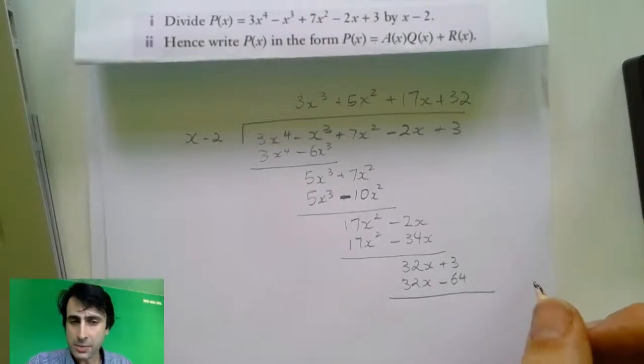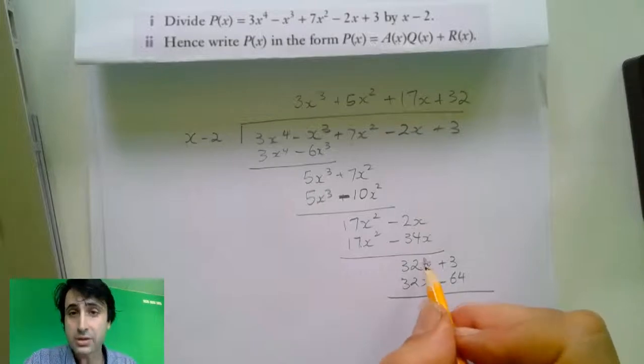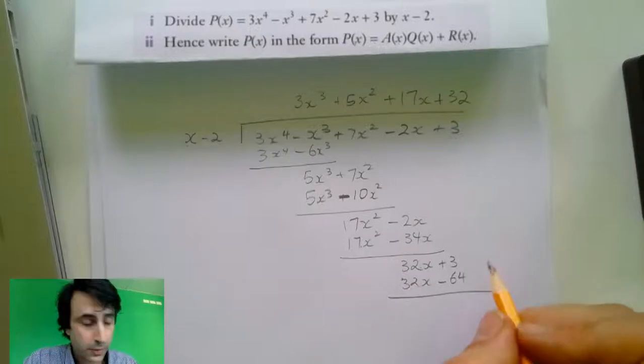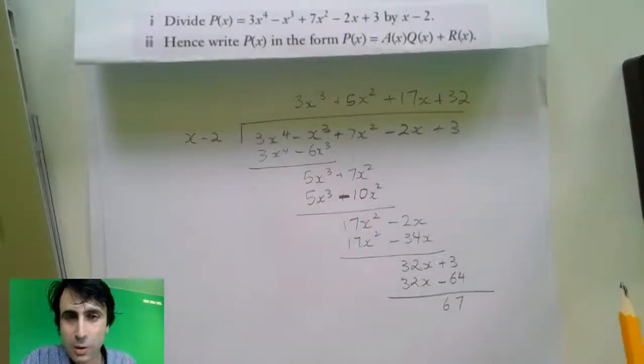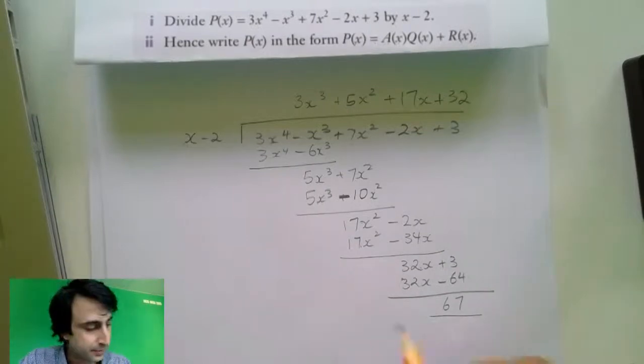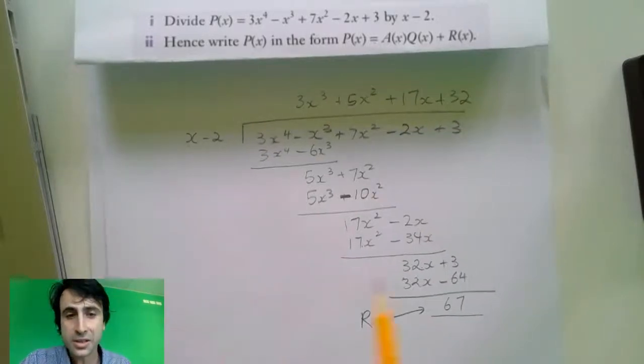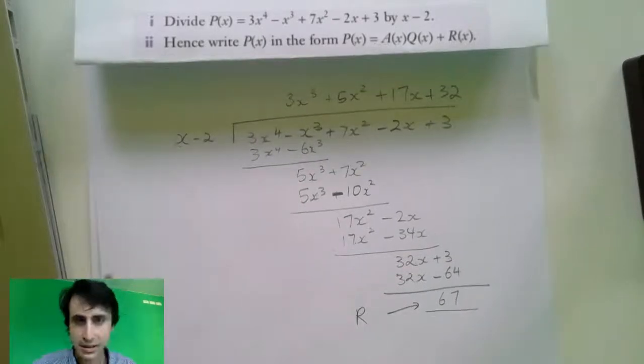Now, a strange thing is going to happen here because 32x minus 32x equals 0. Positive 3 minus negative 64 equals positive 67. Now, how many times does x go into that? It doesn't work. And so, what we see here is that there's actually a remainder of 67. And this can happen often with polynomials. When you divide one into the other, there can sometimes be a remainder. And that leads beautifully onto our next question.